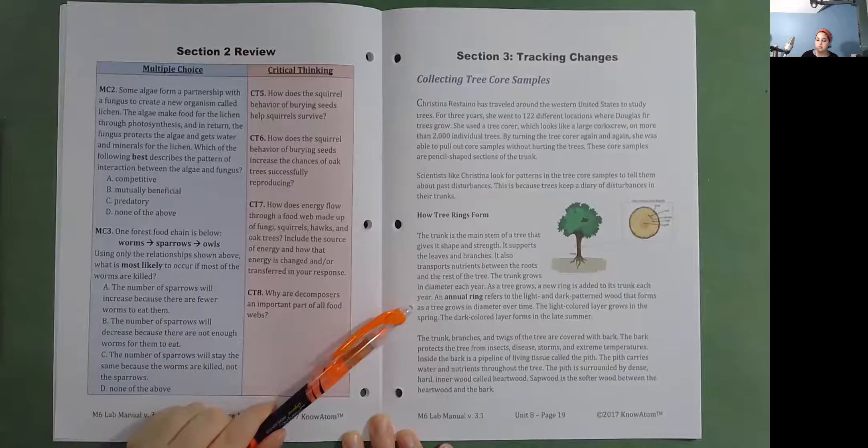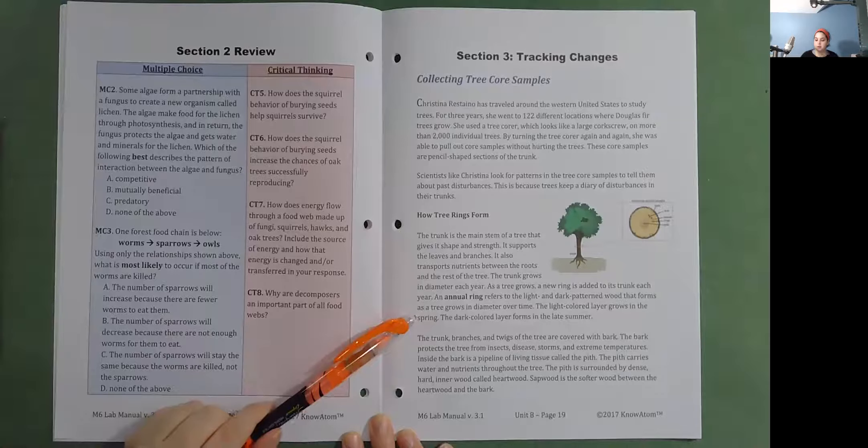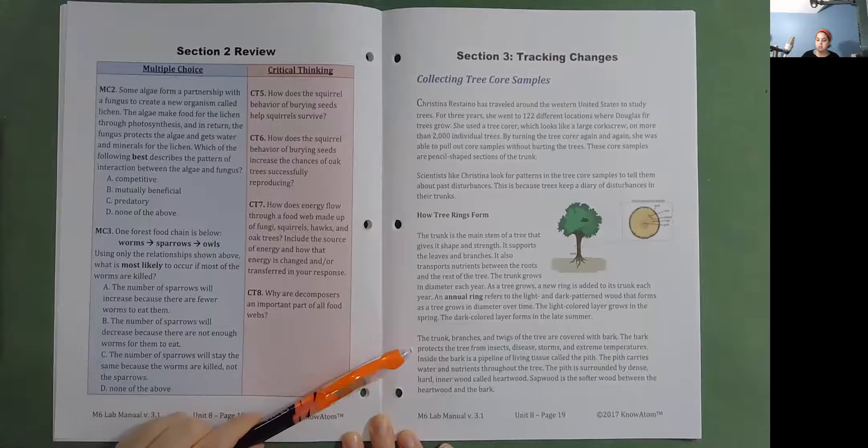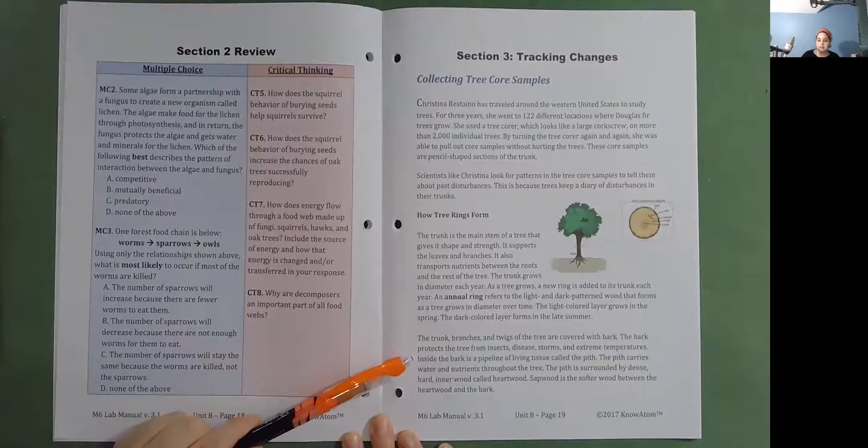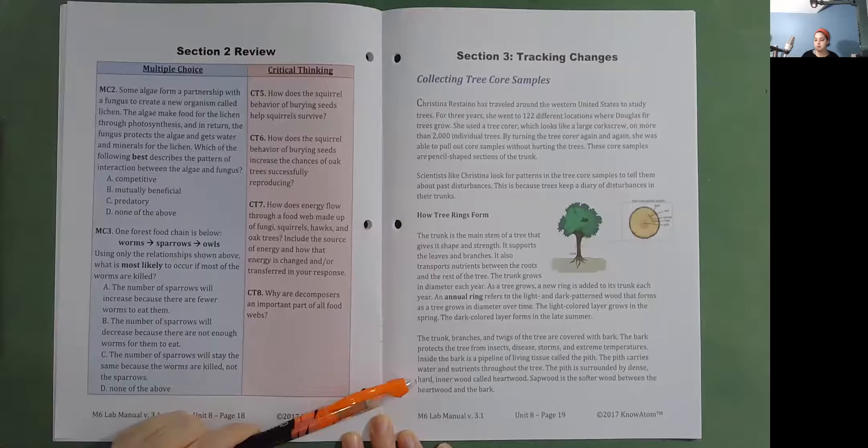An annual ring refers to the light and dark patterned wood that forms as a tree grows in diameter over time. The light-colored layer grows in the spring. The dark-colored layer forms in the late summer. The trunk, branches, and twigs of the tree are covered with bark. The bark protects the tree from insects, disease, storms, and extreme temperatures. Inside the bark is a pipeline of living tissue called the pith. The pith carries water and nutrients throughout the tree. The pith is surrounded by dense, hard inner wood called heartwood. Sapwood is the softer wood between the heartwood and the bark.